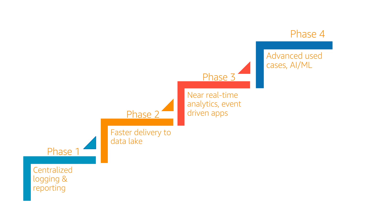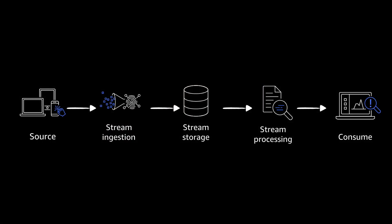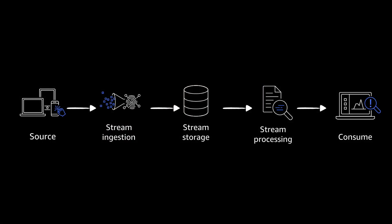The last phase is ingesting analytics and processed events into machine learning — for example, to do analysis and predictions on the data. This is something I'd like to show you in future videos if you are interested, so let me know in the comments below if you'd like to see how to send real-time events to machine learning to get forecasts. So this is how a pipeline should look — these are the key parts: source of events, stream ingestion, stream storage, stream processing, and how we can consume these events.